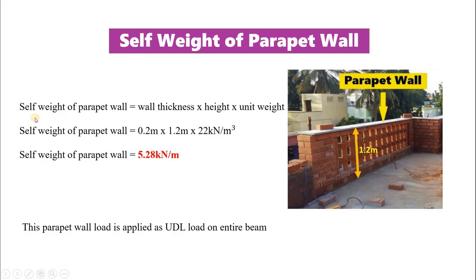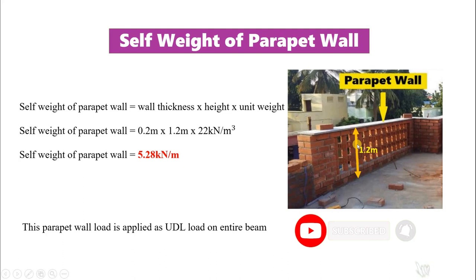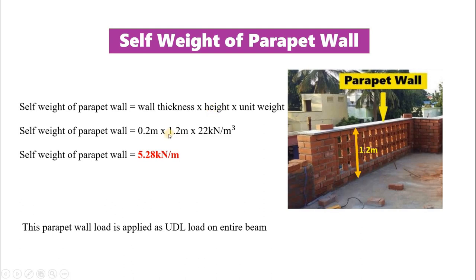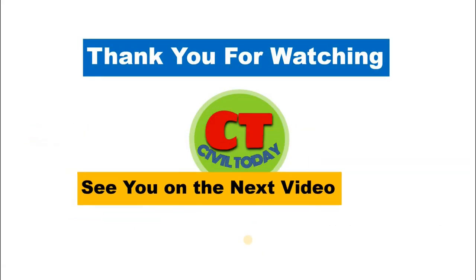Next is self weight of parapet wall. Self weight of parapet wall equals parapet wall thickness into parapet wall height into unit weight of material. Usually thickness of parapet is 200 mm and height of parapet is 1.2 meter. So 0.2 into 1.2 into 22 (brick). Then self weight of parapet is 5.28 kN per meter. This parapet wall load is applied as UDL on the entire beam below. If you have any doubt, let me know in the comment section. Thank you for watching. See you in the next video.